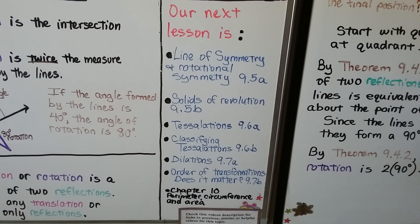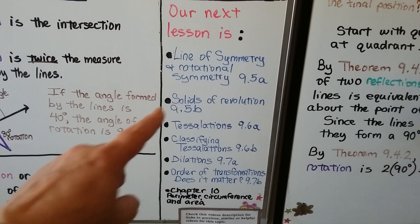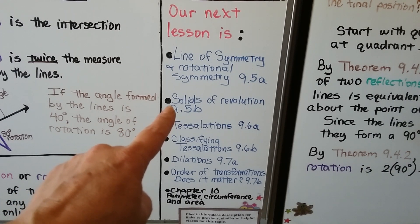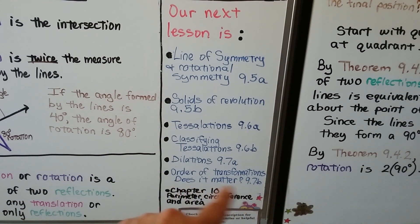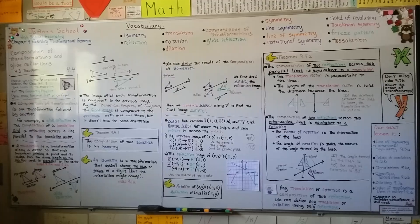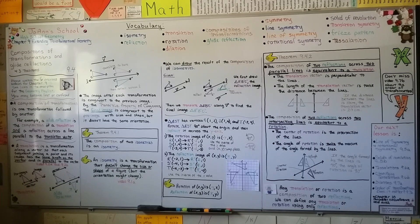Our next lesson is going to be line of symmetry and rotational symmetry in 9.5a, finishing up with solids of revolution in 9.5b. Then we'll get into 9.6 and 9.7, and remember 9.7b talks about the order of transformations. Everything is in the geometry playlist in the description. I hope you were able to take notes — my little yellow hands tell you the important notes to write down.